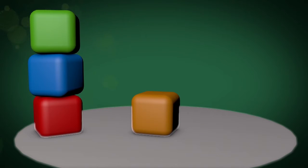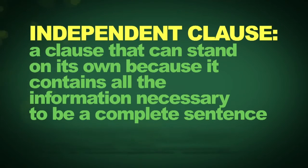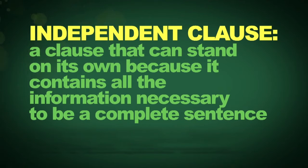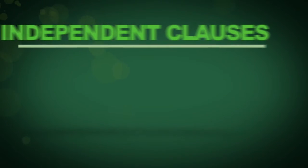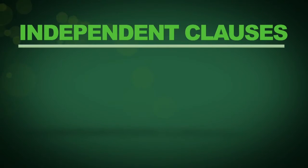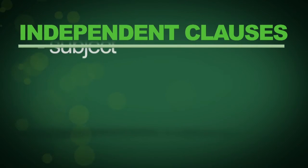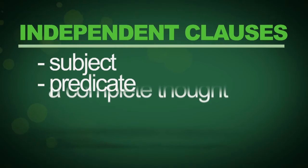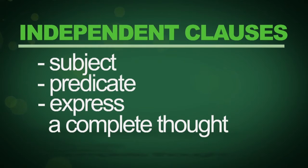There are two types of clauses: independent and dependent. An independent clause contains all the information necessary to be its own sentence, so it can exist and make sense on its own. In order for a clause to be independent and function as a sentence, it needs to have three things: a subject, a predicate, and it must express a complete thought.